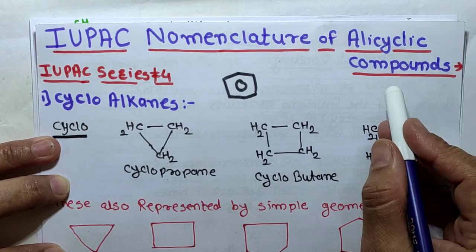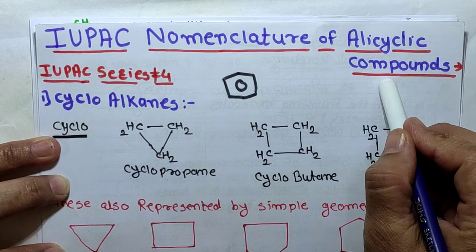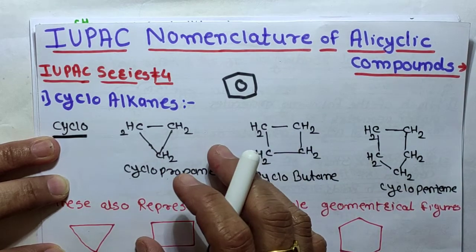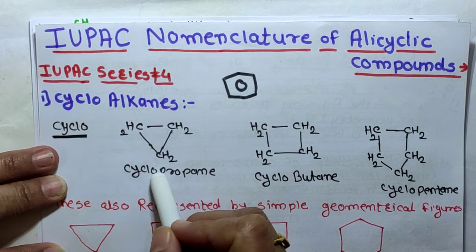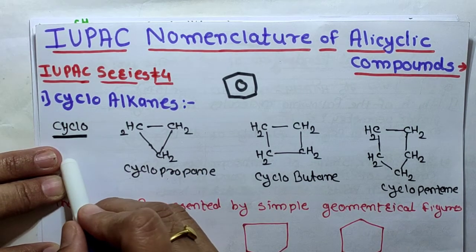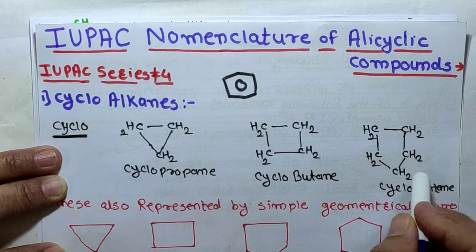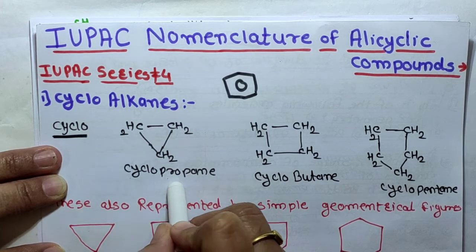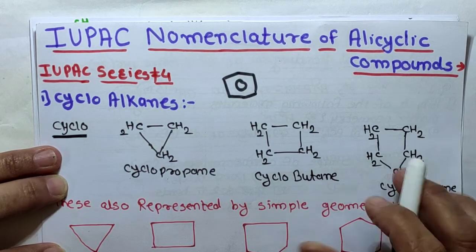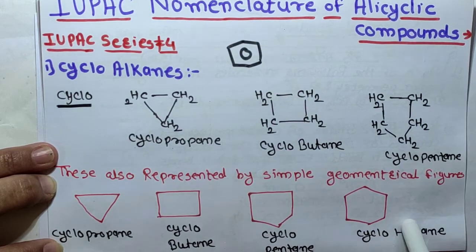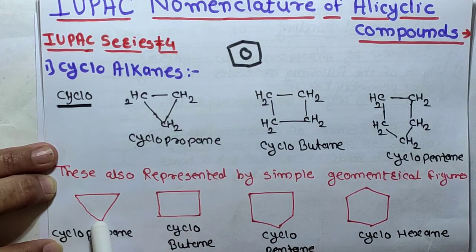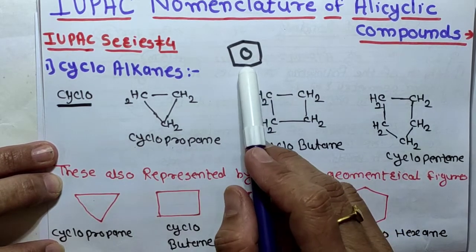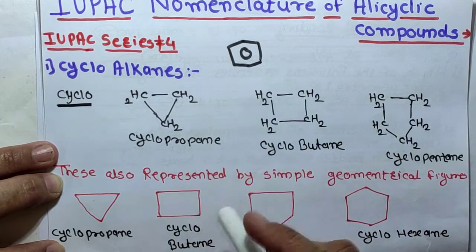Alicyclic compounds are part of cyclic compounds. Cyclic compounds are divided into two types: first is alicyclic, whose properties are similar to aliphatic compounds. Cycloalkanes are alkanes in which carbon atoms are arranged in a ring. They are named by adding the prefix 'cyclo' to the name of the alkane having the same number of carbon atoms. For example, three carbons gives cyclopropane, then cyclobutane, cyclopentane, and cyclohexane — represented by simple geometrical figures where corners contain carbon atoms.